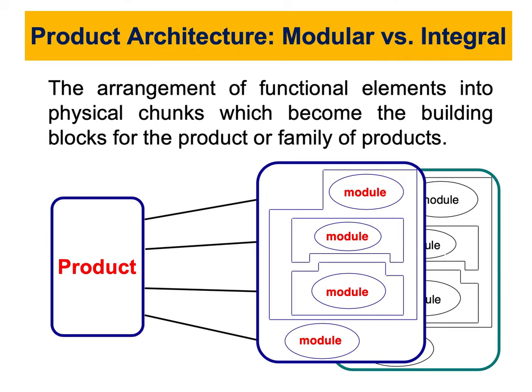We have two types of architecture. The first and most popular is called modular architecture. Modular architecture has two properties: first, each chunk implements one or a few functional elements in their entirety. Second, the interactions between chunks are well-defined and are generally fundamental to the primary function of the product.